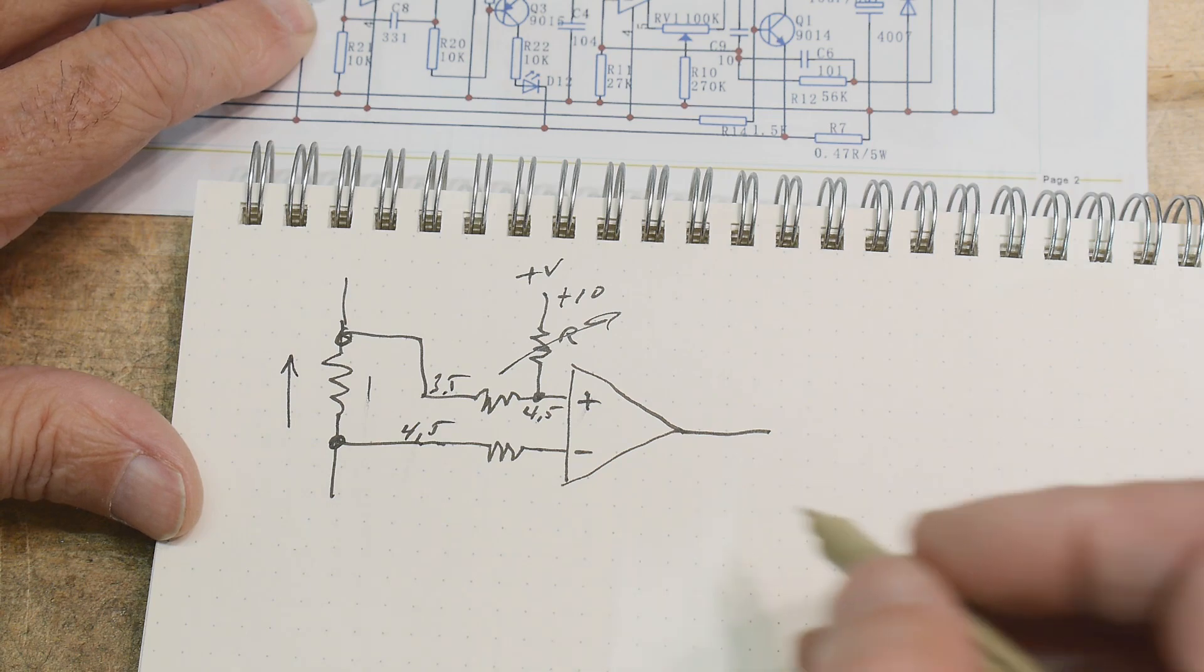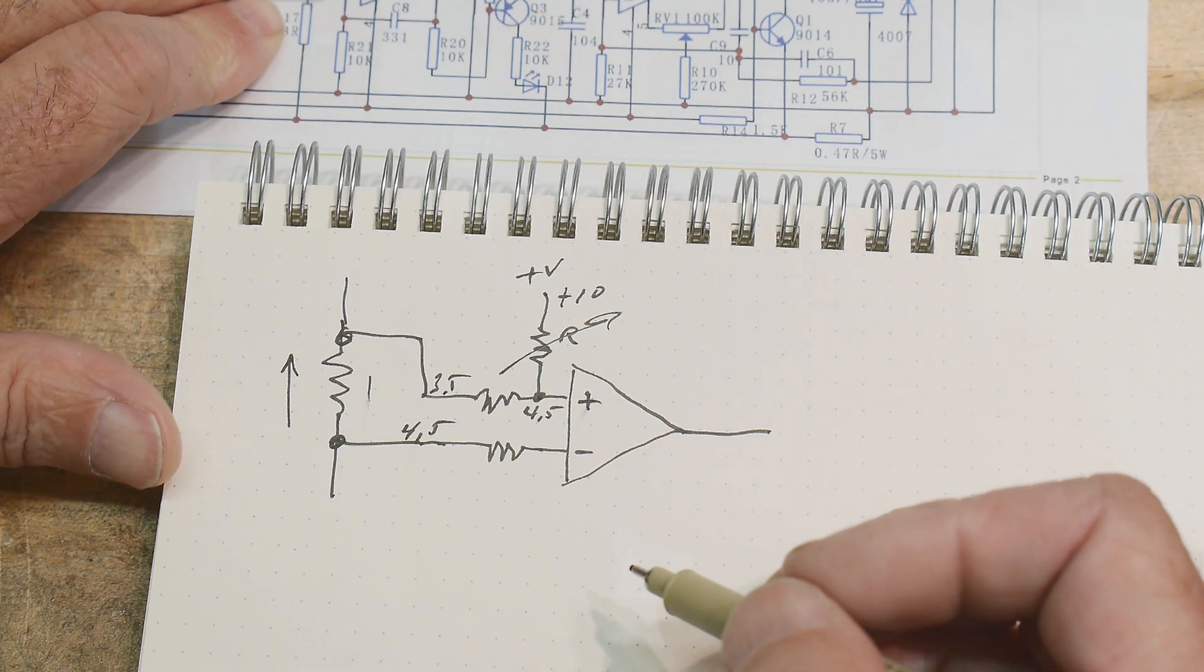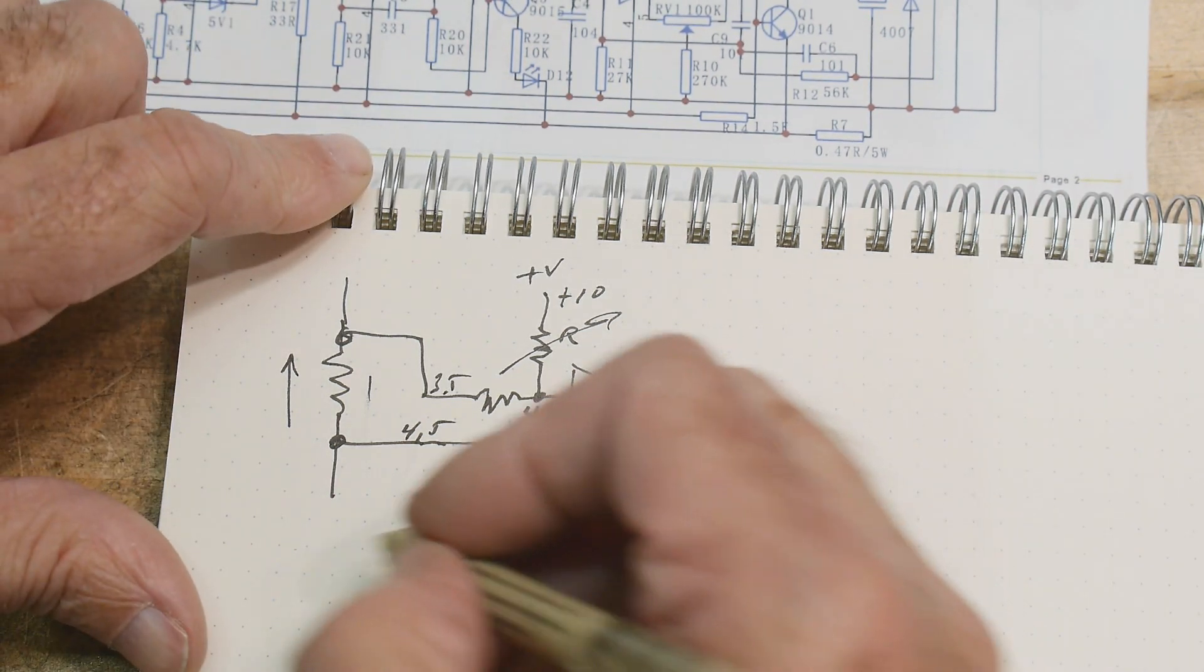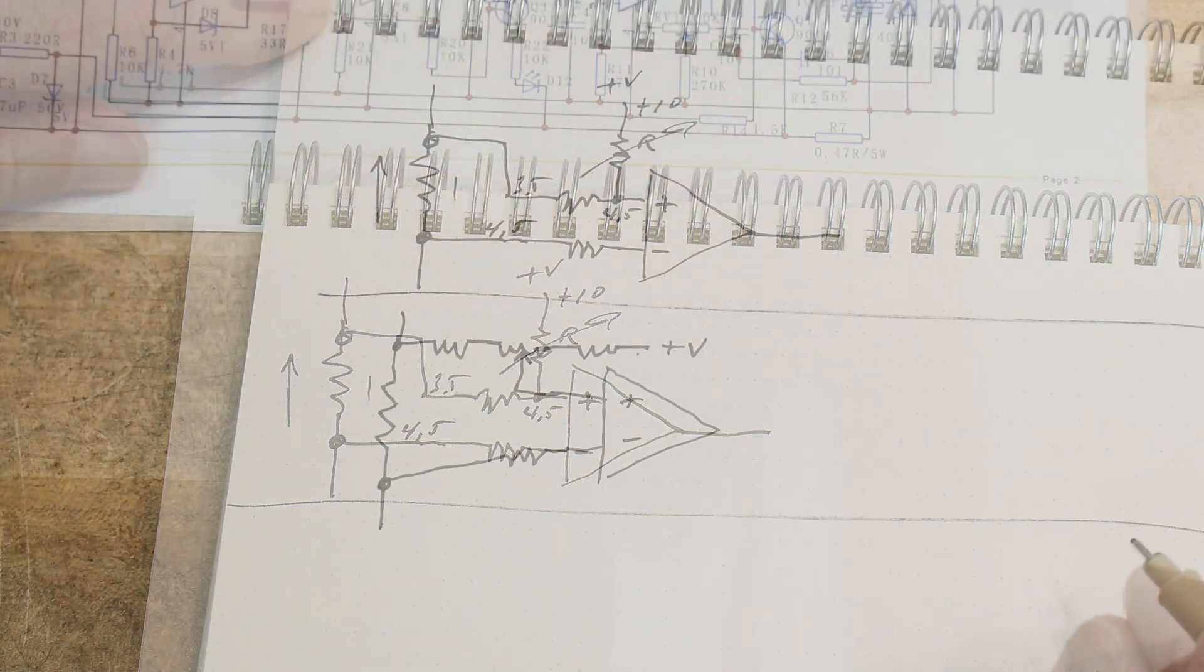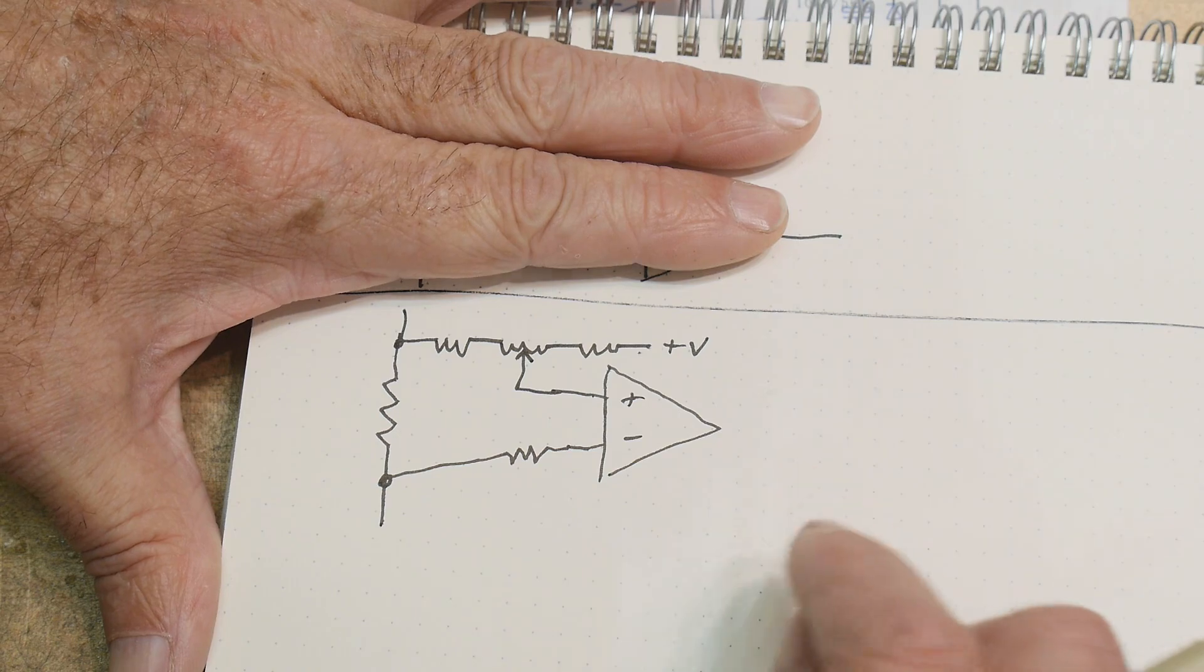Now in the circuit we have, let me see if I can get this right, just a second, let me draw it down first and then we'll come back and I'll show you how it works. All right, so this is how the circuit really is.